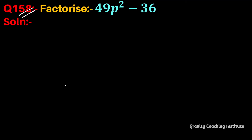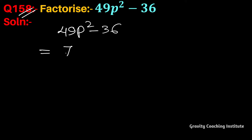Question number 158: factorize 49p² minus 36. We know that 49 is the square of 7, so we can write this as (7p)² minus 36, and 36 is the square of 6, so it becomes (7p)² minus 6².